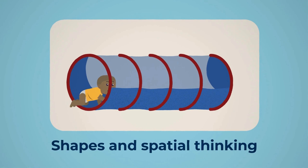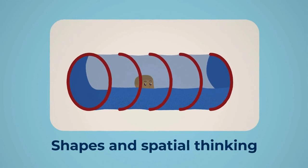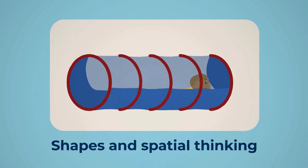Shapes and spatial thinking can be demonstrated by describing physical objects, their position relative to each other and their direction of movement.